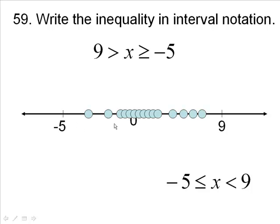Now, all the way up to the 9, but do not include the 9. And all the way down to the negative 5, but we're going to include the negative 5. So what I need to do is bracket in the negative 5, because it's less than or equal to, or greater than or equal to.